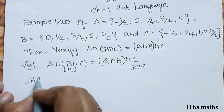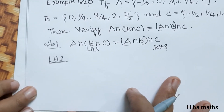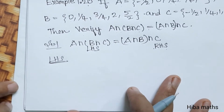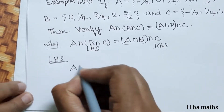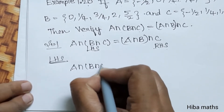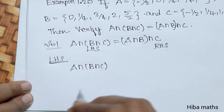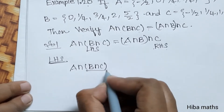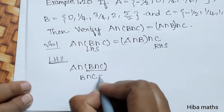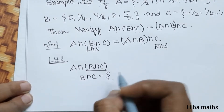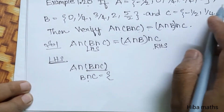First, let's prove the left-hand side: A intersection (B intersection C). To do this, first find B intersection C.